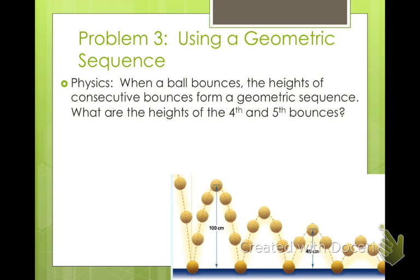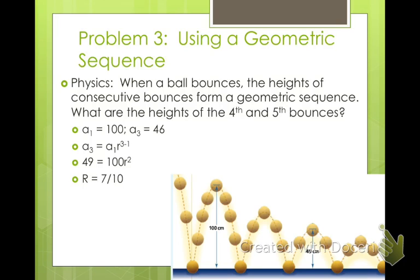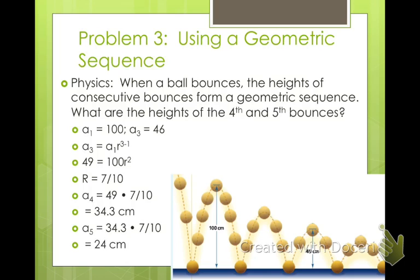In physics, when a ball bounces, the heights of consecutive bounces form a geometric sequence. We need to find the heights of the fourth and fifth bounces, given bounce 1 is 100 centimeters and bounce 3 is 49 centimeters. Using the formula, a sub 3 = 100 times r squared = 49. Dividing by 100 and taking the square root: r = 7/10, since the square root of 49 is 7 and the square root of 100 is 10. Multiplying 49 by 7/10 gives 34.3 centimeters for bounce 4, and 34.3 times 7/10 gives approximately 24 centimeters for bounce 5.